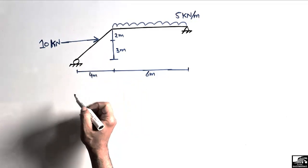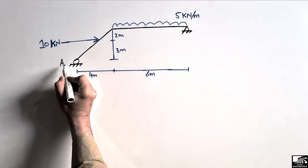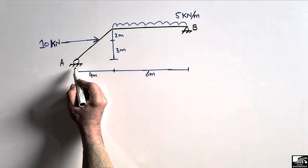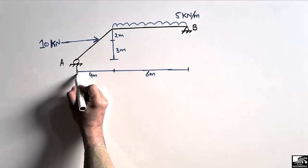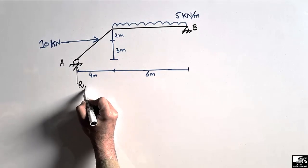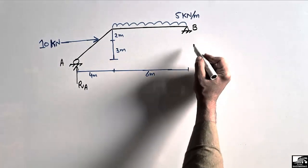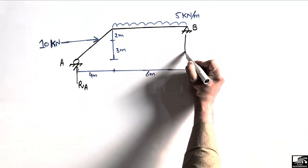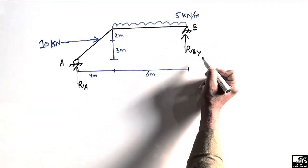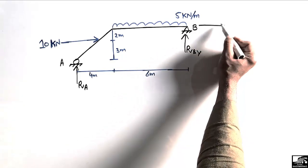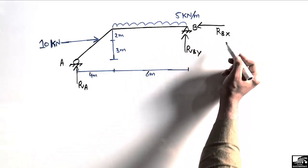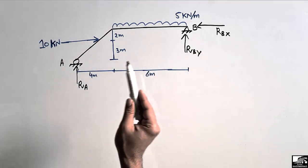We have to find out the support reactions for this frame. This is support A — a roller support, which can only resist vertical load, so its reaction is named RA. Support B is a hinge support, so it can take both the vertical load RBY as well as the horizontal load RBX.